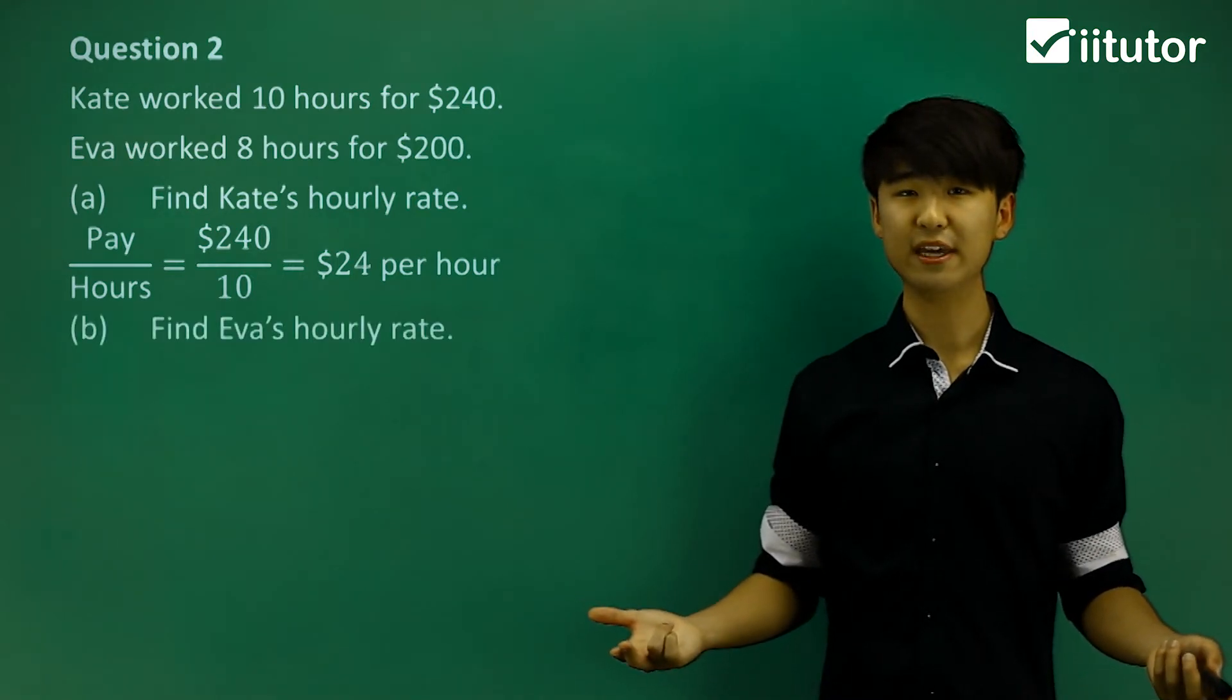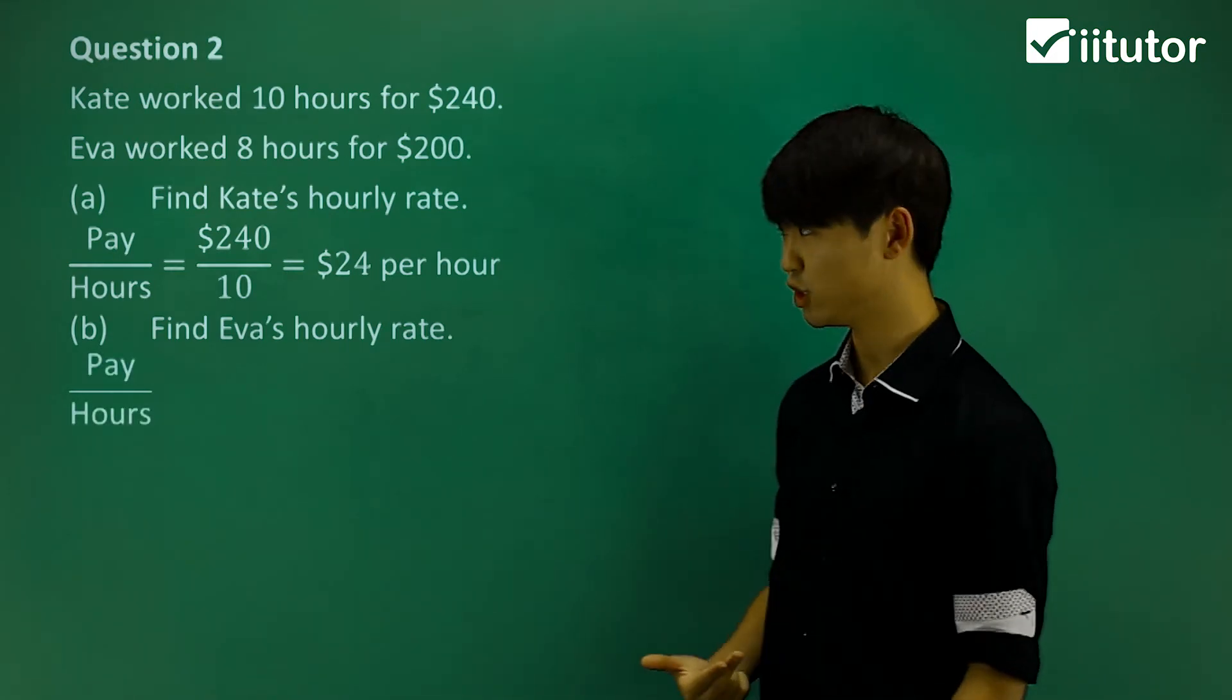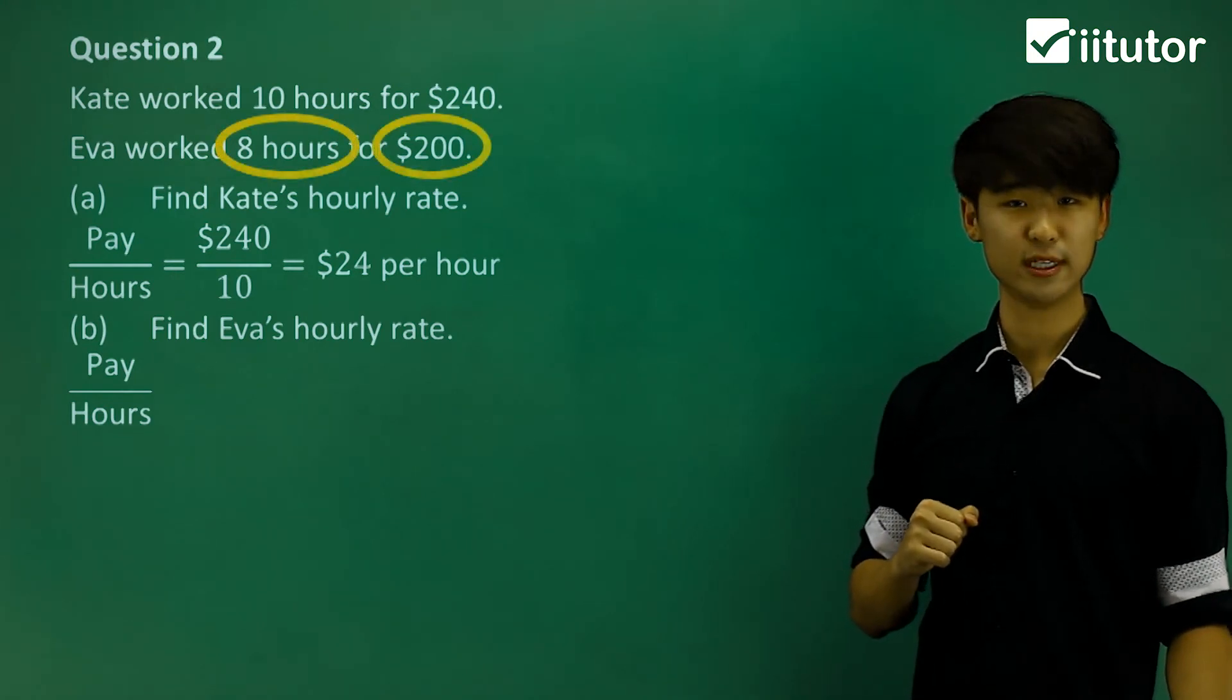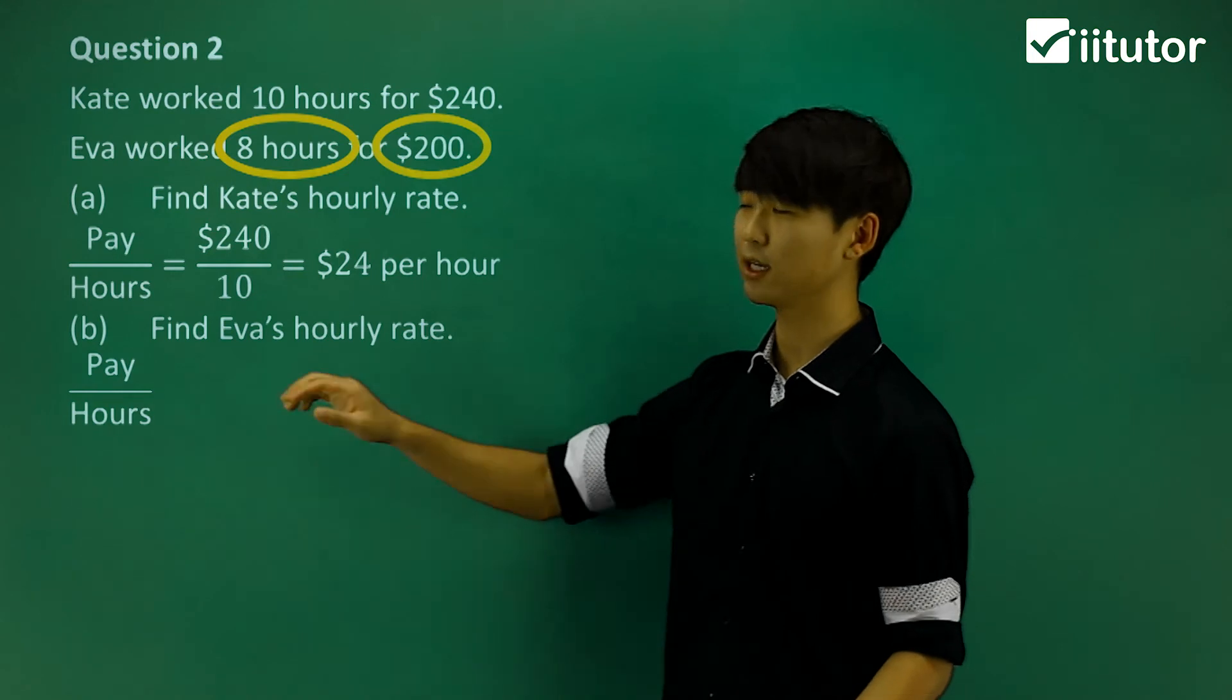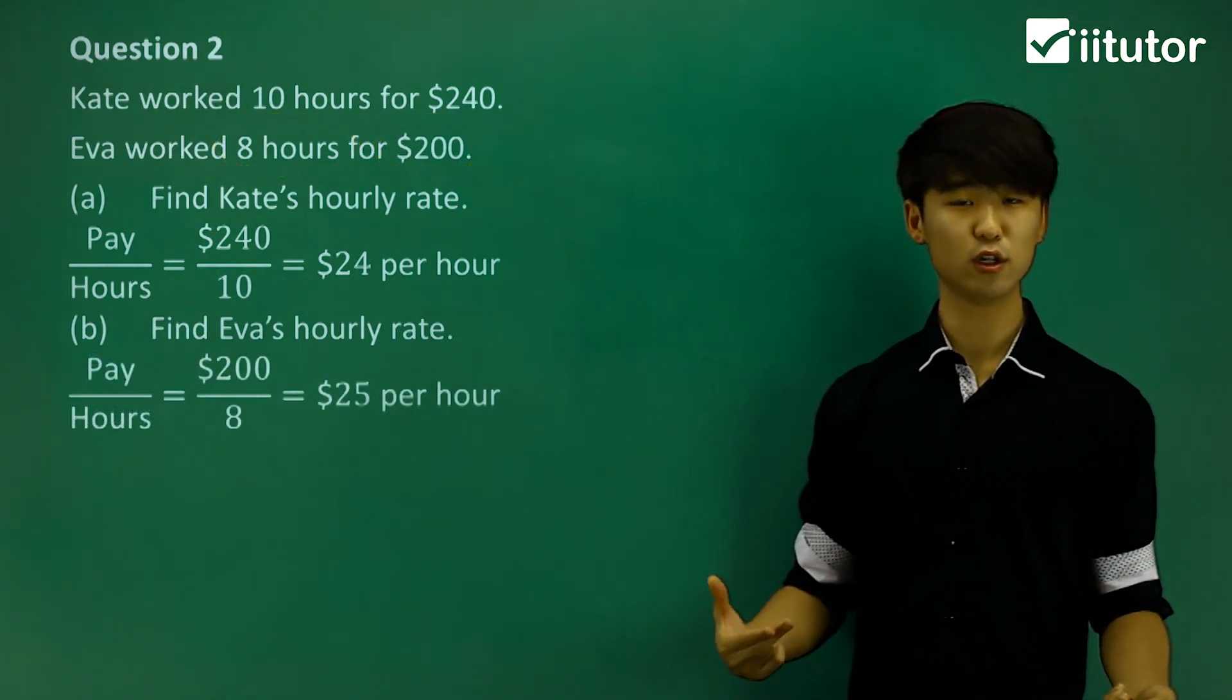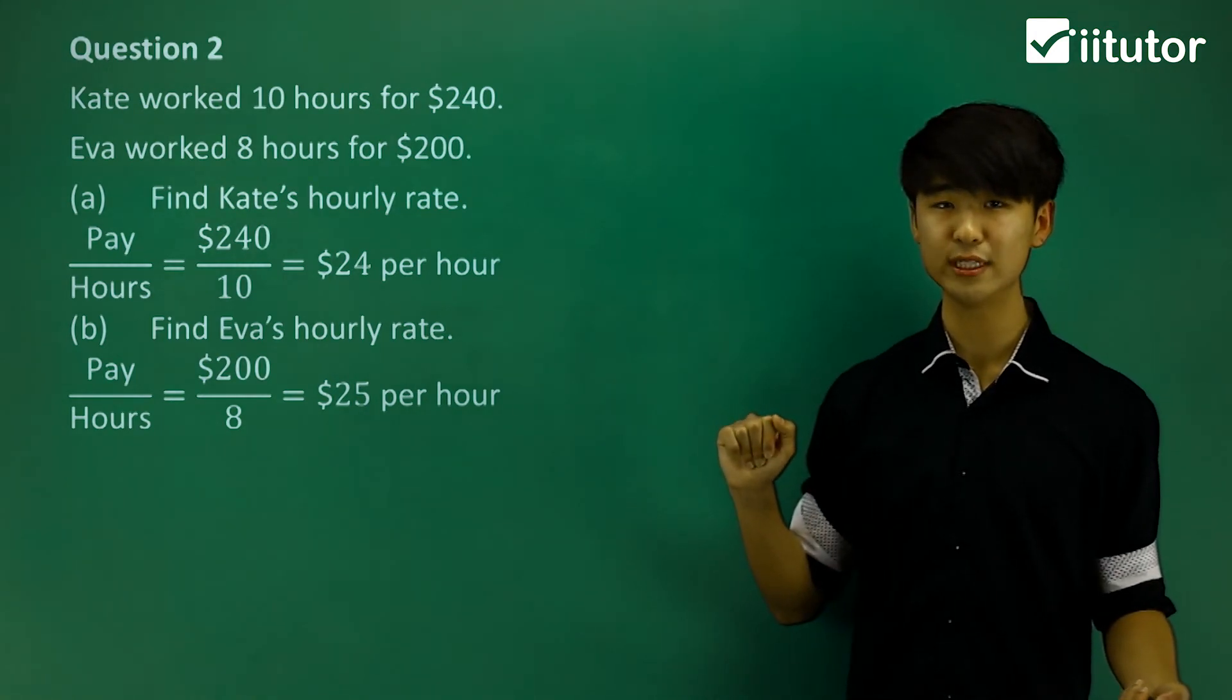Now what about Eva's rate? So Eva's hourly rate, again, we're going to do the amount of pay over how many hours she did, which we know that she has received $200 for eight hours of work. So let's take a look at her hourly rate. $200 over eight hours gives me $25 per hour. So these are our two hourly rates for these two people.